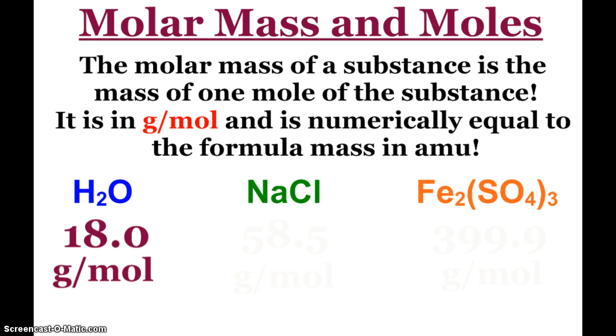Hydrogen on the periodic table is 1.0. Oxygen is 16.0. I like to go to the tenth, and it just always works for me. So two of the hydrogens plus one of the oxygens, that's where we get 18 grams per mole.